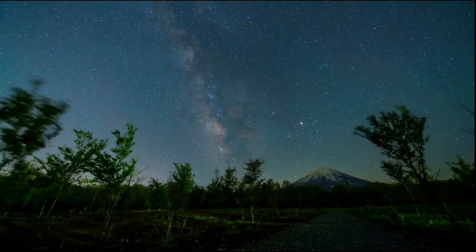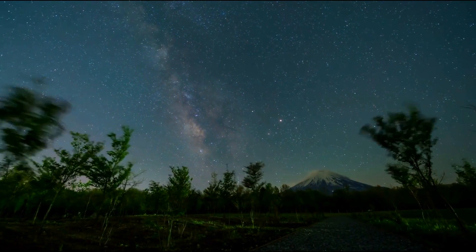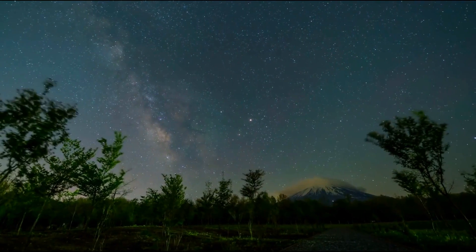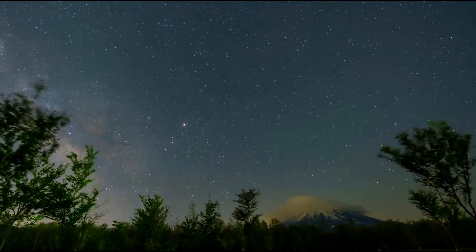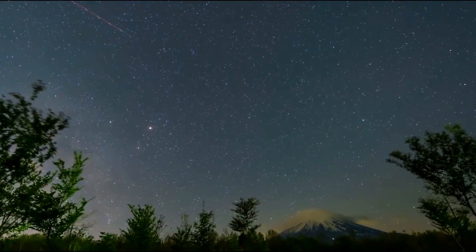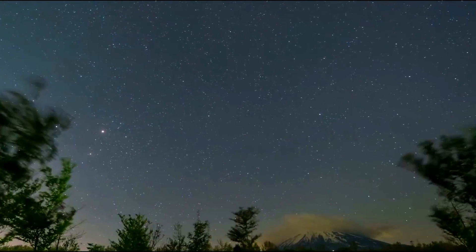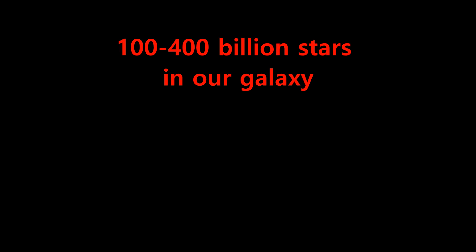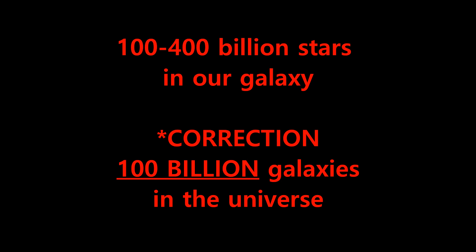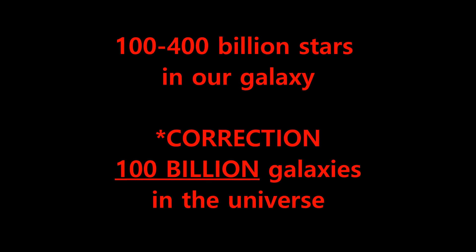I won't be going any deeper than this into the Drake Equation, but I will say this. There's a firm scientific consensus that even when the most conservative, reasonable figures are plugged in, the equation still predicts that a massive number of planets here in the Milky Way are inhabited by intelligent beings. We can also safely assume the number of planets and moons inhabited by simpler forms of life is exponentially greater. Keep in mind, this equation only refers to intelligent life in the Milky Way galaxy. Given that there are 100 billion to 400 billion stars in our galaxy and over 1 billion galaxies in the universe, the likeliest conclusion is that the universe is absolutely teeming with life.